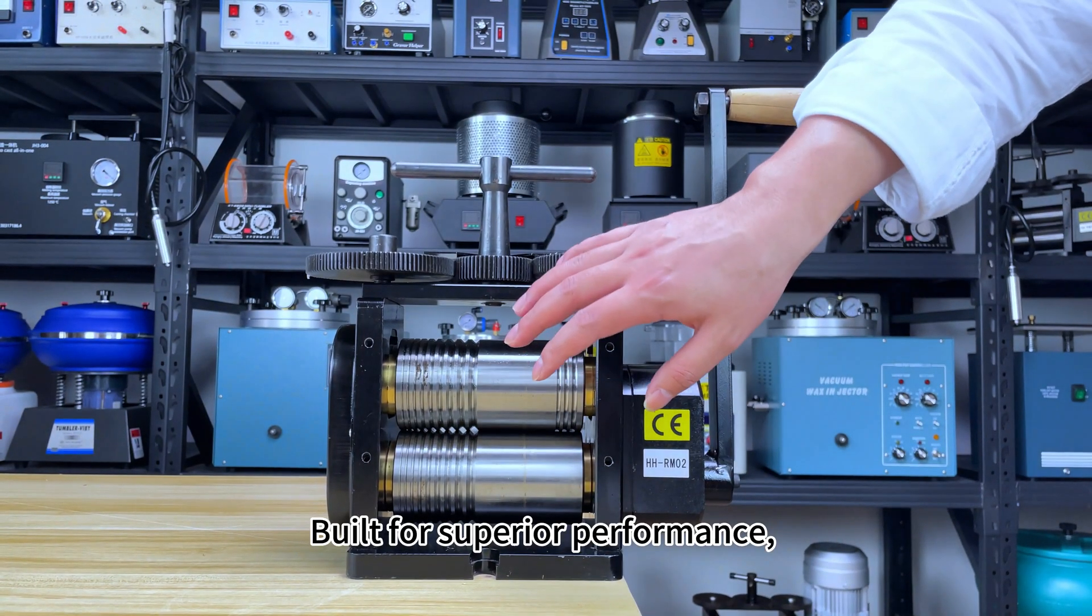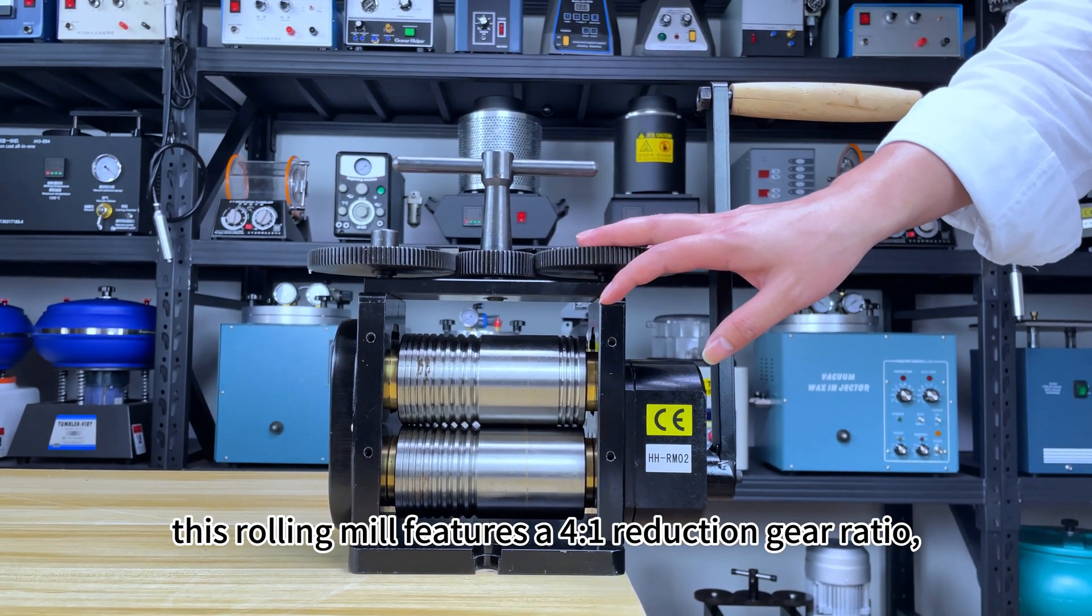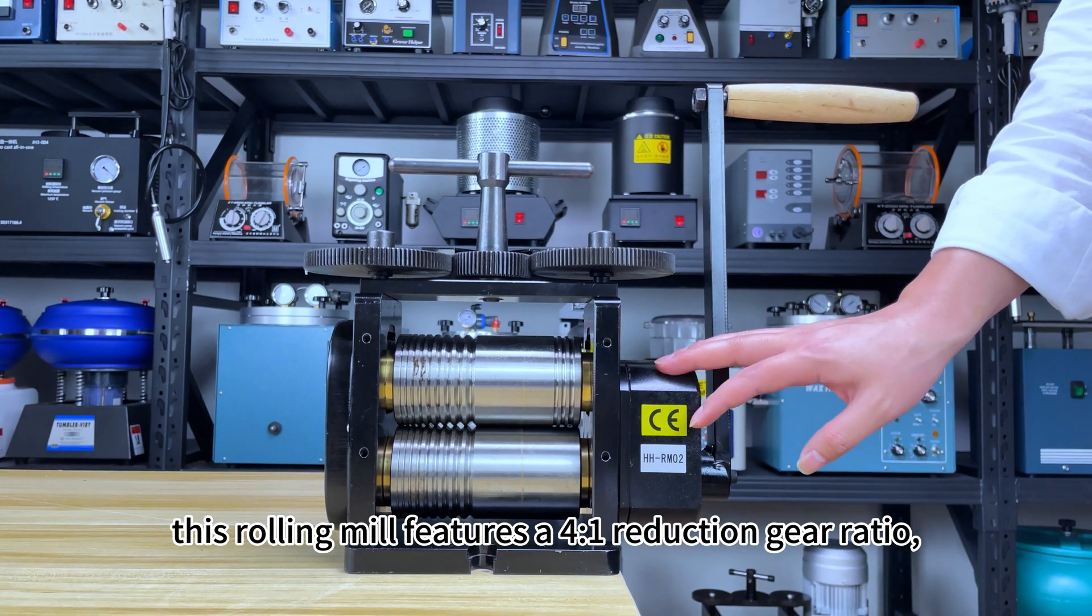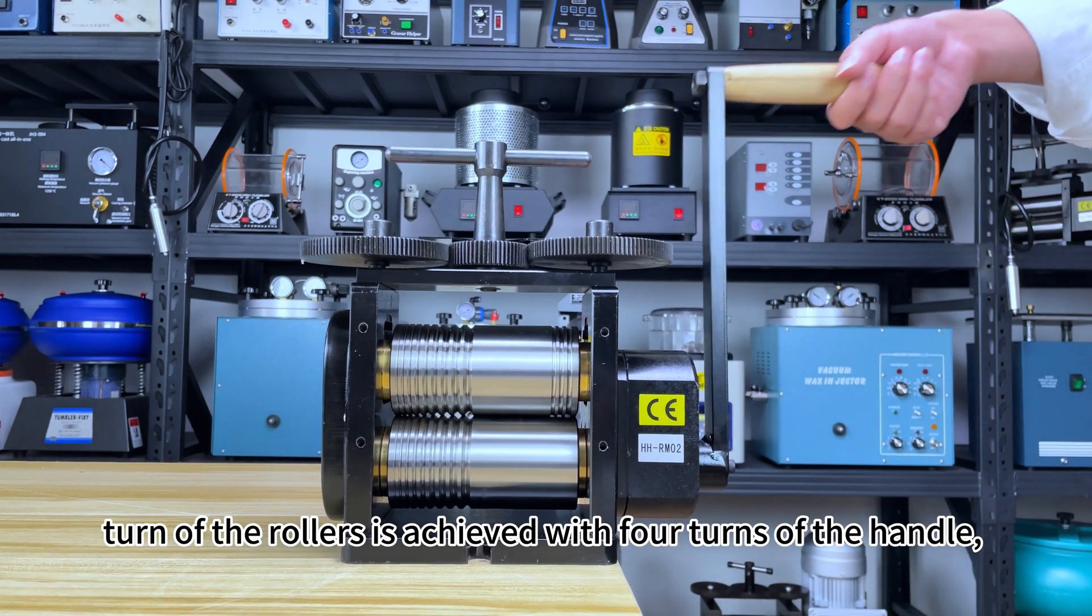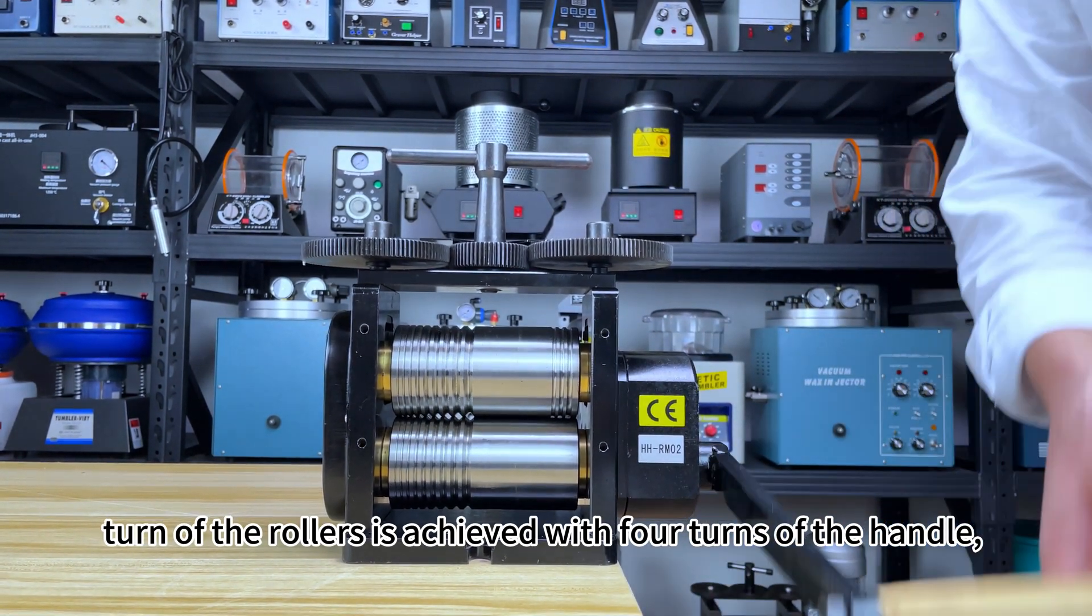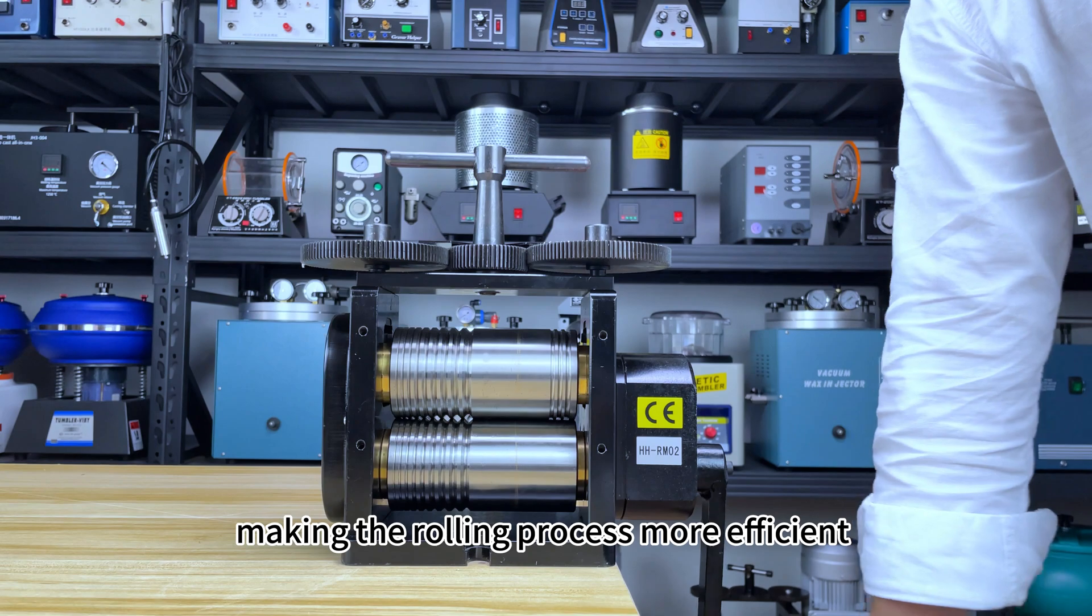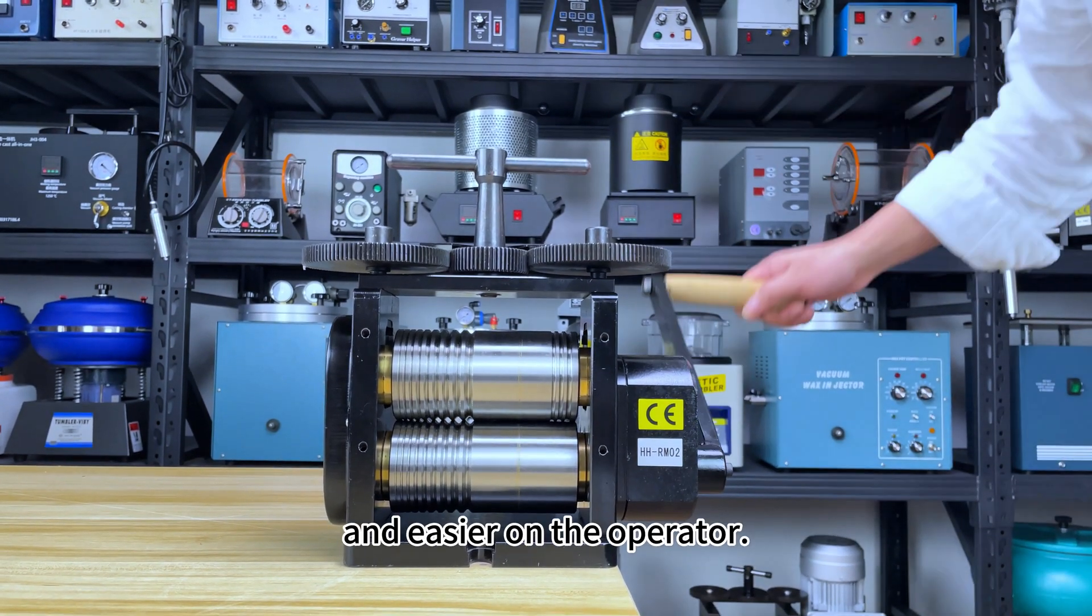Built for superior performance, this rolling mill features a 4-to-1 reduction gear ratio, allowing for smooth operation with minimal effort. Each complete turn of the rollers is achieved with four turns of the handle, making the rolling process more efficient and easier on the operator.